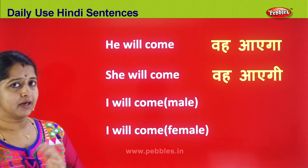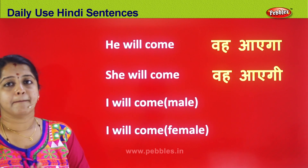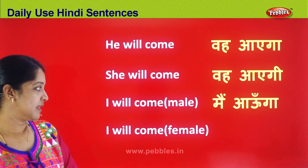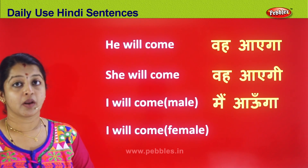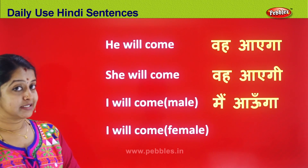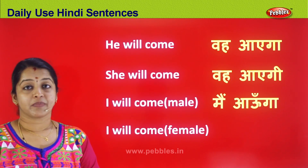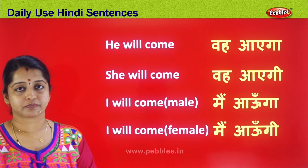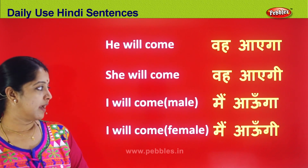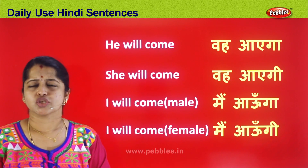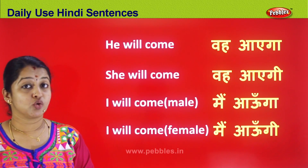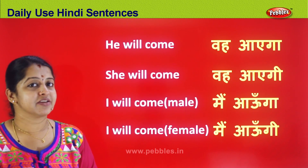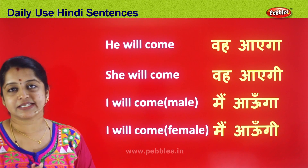Next, 'I will come' if I am a boy. My name is Ganesh — I say Main Aonga. And the same thing if I am Sita, a lady — I will say Main Aongi. Again the difference of GA and GI. So if it is a male, the ending is GA; if it is a female, the ending is GI.